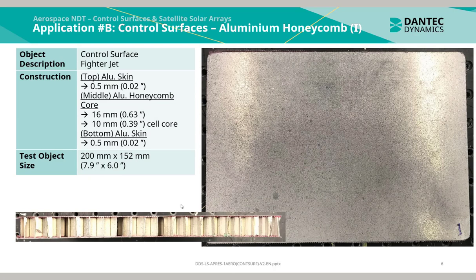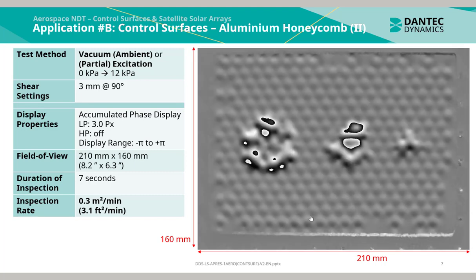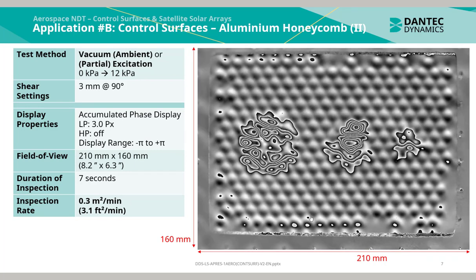Another application of aluminum honeycomb construction with a 10 mm cell core. The test object size was 200 mm by 152 mm. Using vacuum ambient or vacuum partial excitation with a pressure jump from 0 to 12 kilopascals, the duration of this inspection took approximately seven seconds, yielding an inspection rate of 0.3 m² per minute. Notice that the individual cell cores are identifiable in the phase display map.